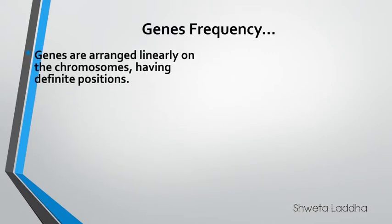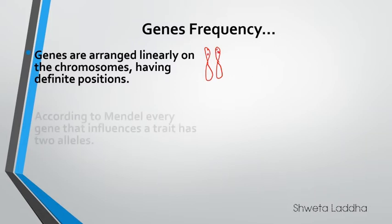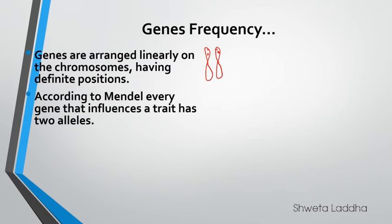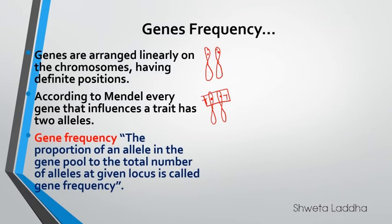Now let us see the last concept — what is gene frequency? Genes are arranged linearly on chromosomes at definite positions called loci. According to Mendel, every gene influencing a trait has two alleles — for example, capital T and capital T for tallness, shown as an allelic pair. The proportion of an allele in the gene pool to the total number of alleles at the same given locus is called gene frequency.